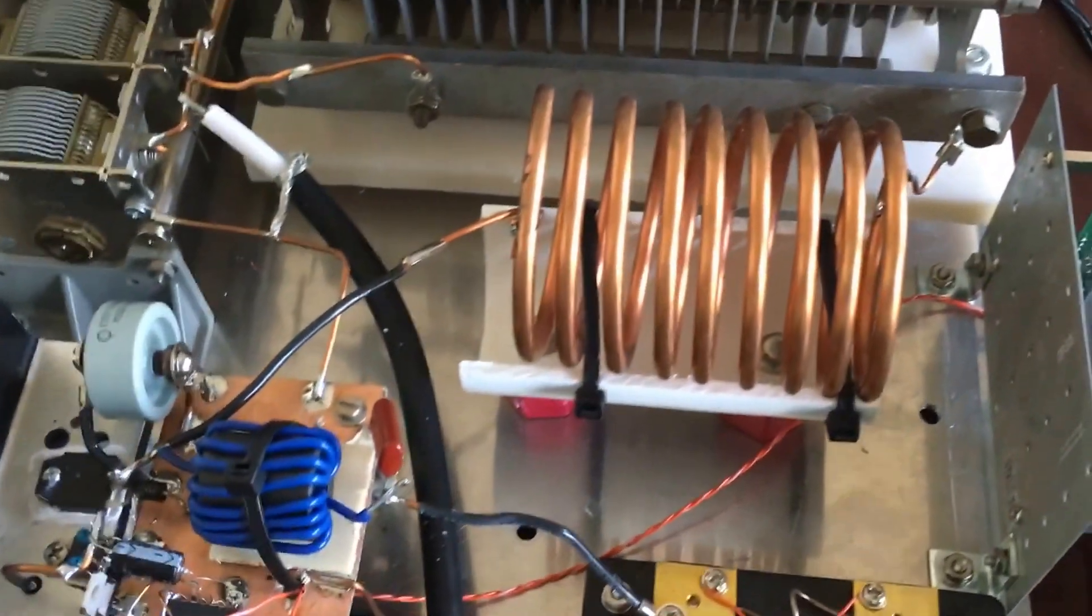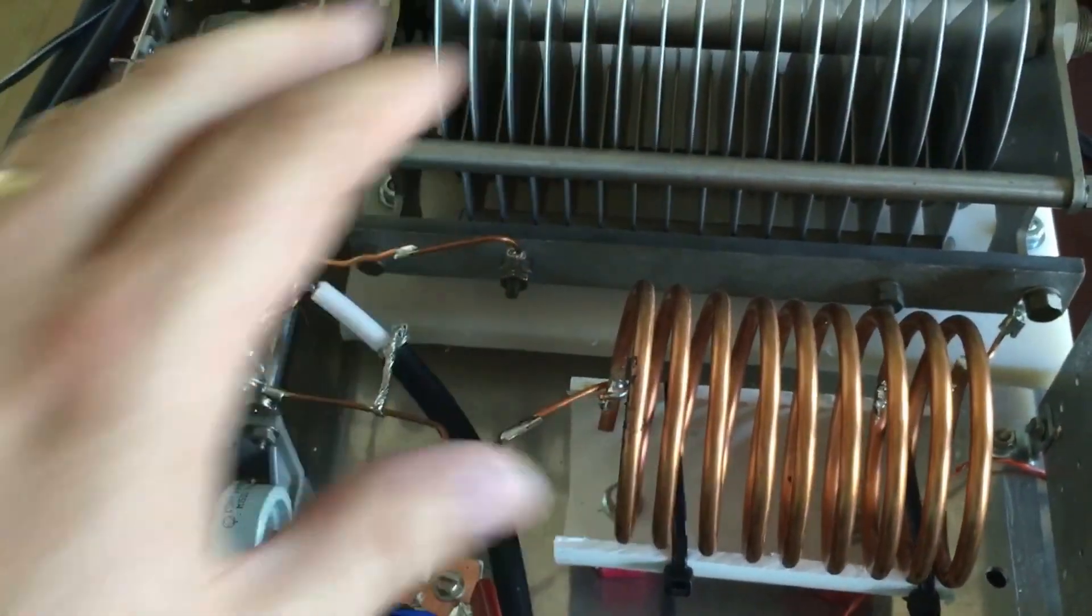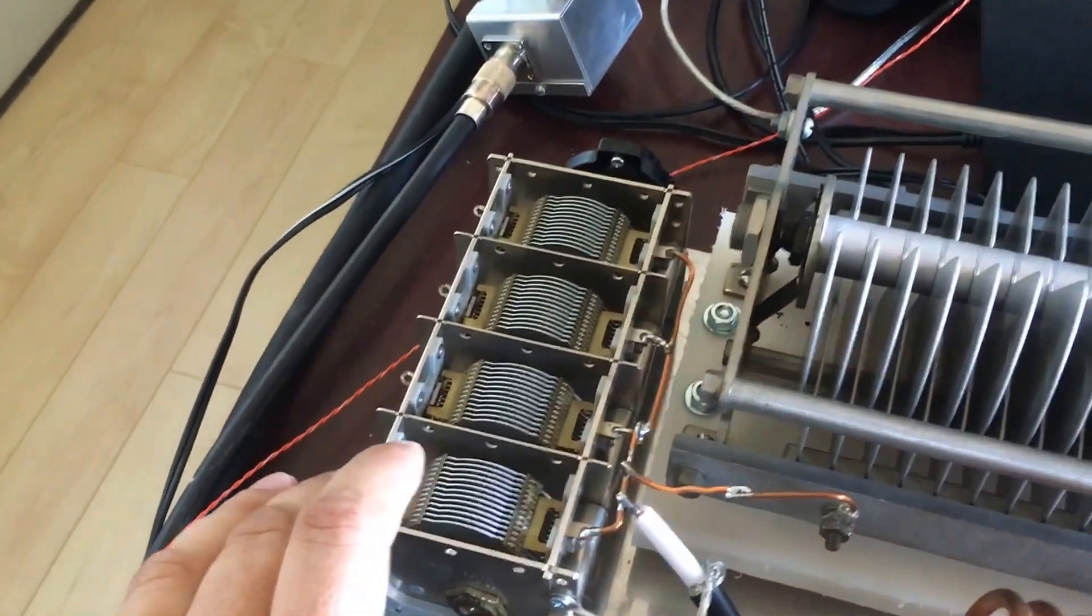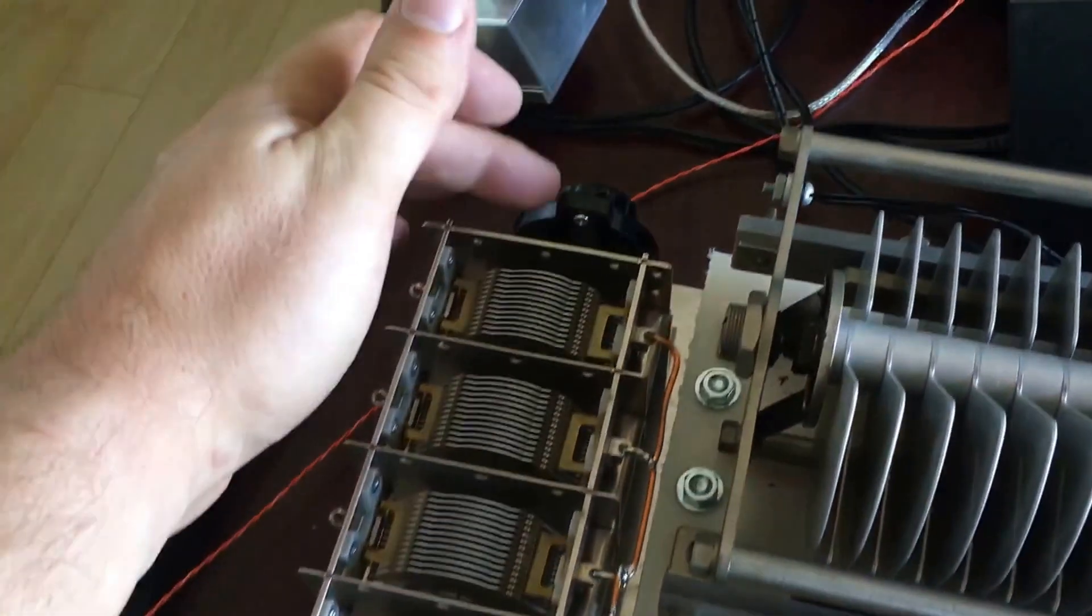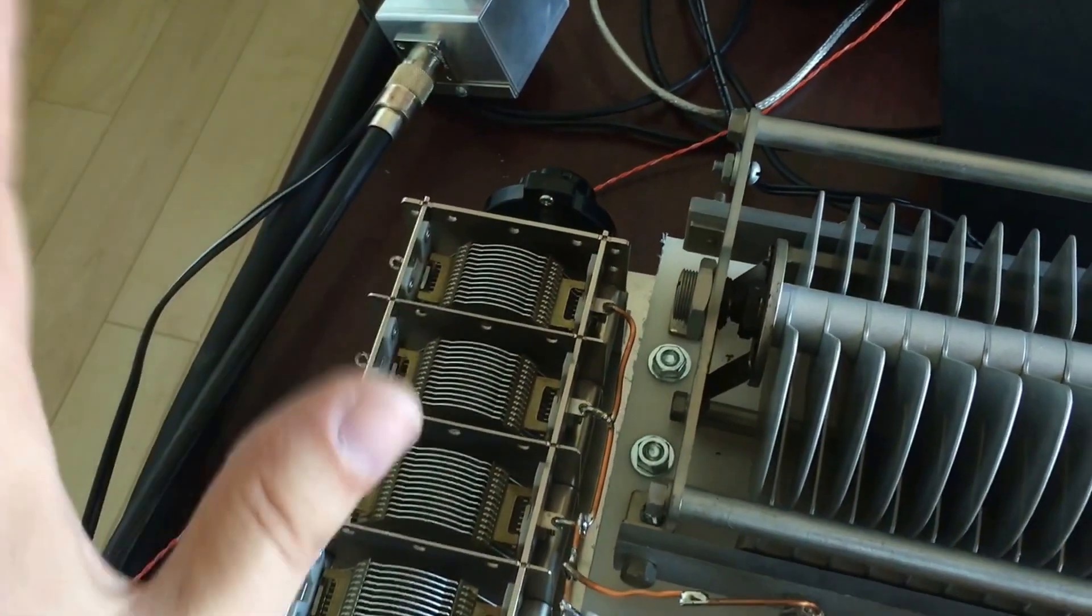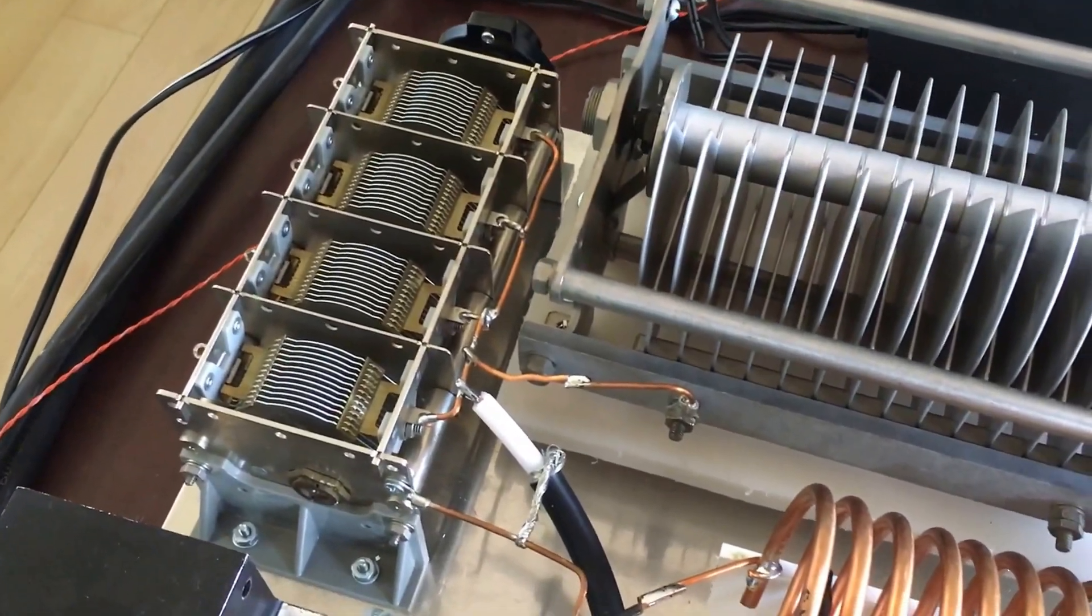So the output of the FET goes to this series tuned network for 40 meters and this is the loading capacitor right here. I put a vernier drive on the loading capacitor so I can fine tune it and it wouldn't move at all once I got it to the adjustment I wanted.